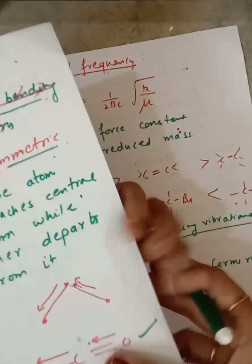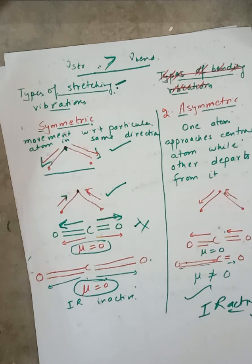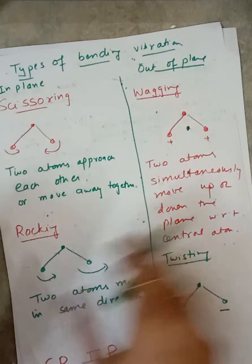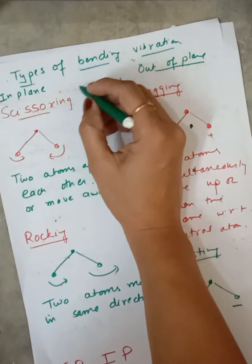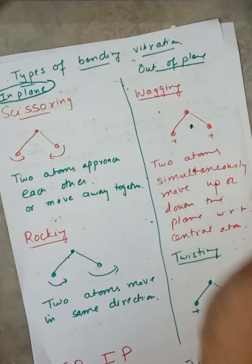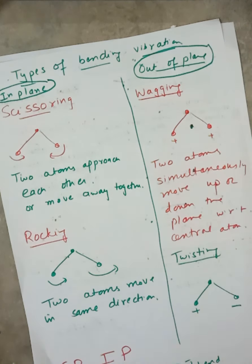So we have seen there are two types of stretching vibrations: symmetric and asymmetric. Now coming to bending vibrations — there are four types. Two are in-plane vibrations, where the plane of atoms remains the same, and two are out-of-plane vibrations, where the atoms change their plane.